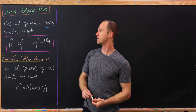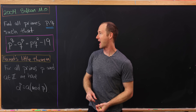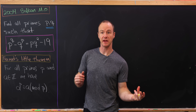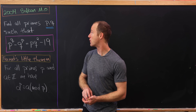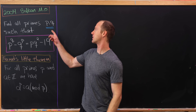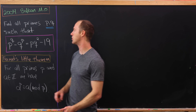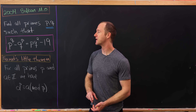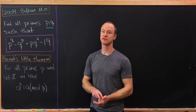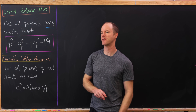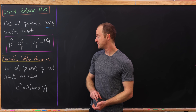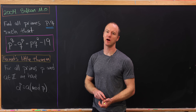Today we've got a nice number theory problem from the 2004 Balkan Math Olympiad. We're going to solve a Diophantine equation over not just integers but primes. Our goal is to find all primes p and q such that p^q minus q^p equals p times q squared minus 19. Throughout this solution we're going to be using Fermat's Little Theorem, which says that for all primes p and integers a, a^p is congruent to a mod p.